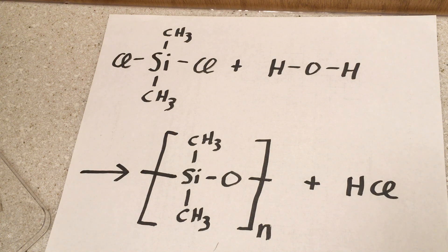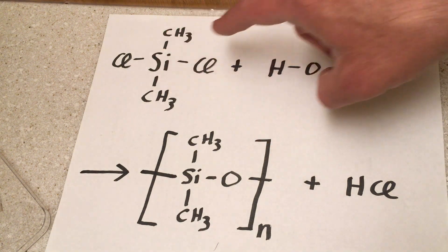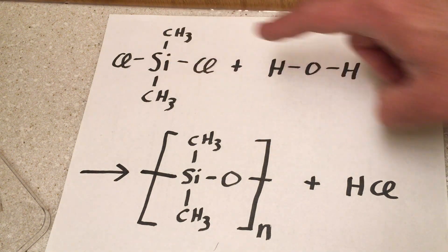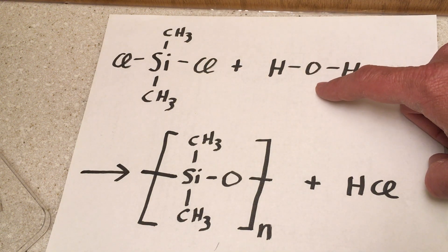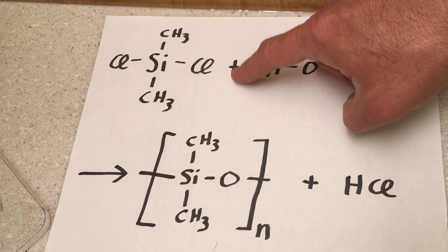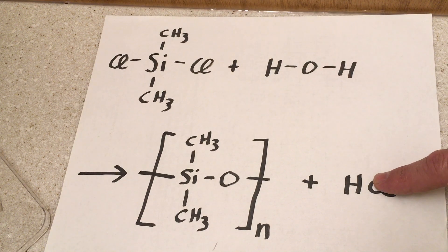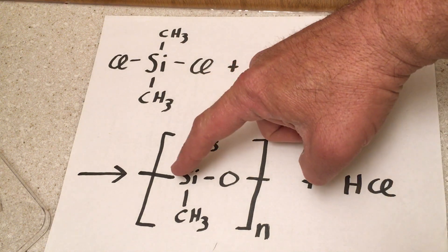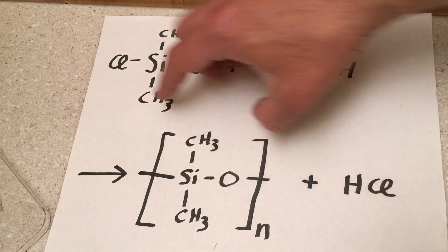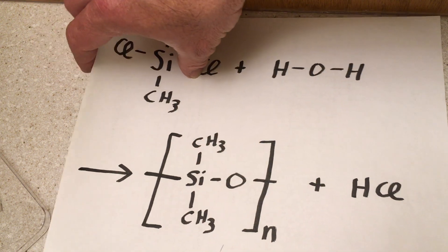To make polydimethylsiloxane, what people often do is they take this compound, dichlorodimethylsilane, and react it with water. And what happens is the hydrogens combine with the chlorines to make hydrochloric acid. The oxygen is linked to the silicones and make this chain with this repeating silicon oxygen, silicon oxygen, silicon oxygen backbone.